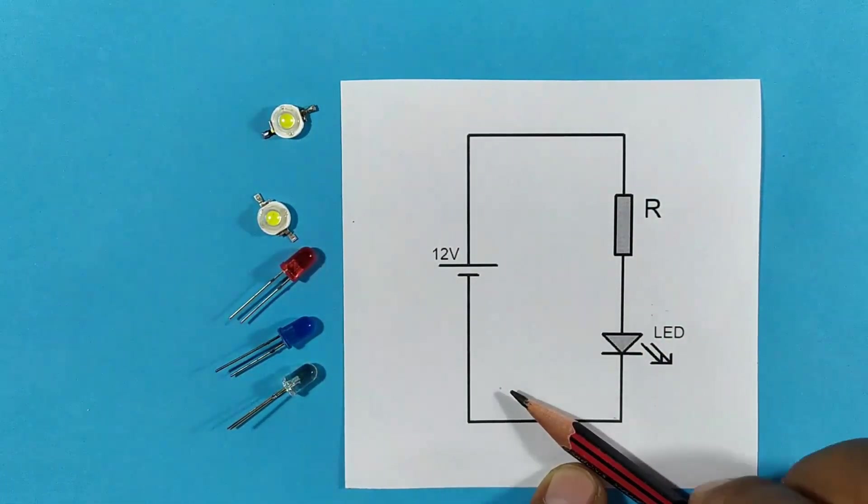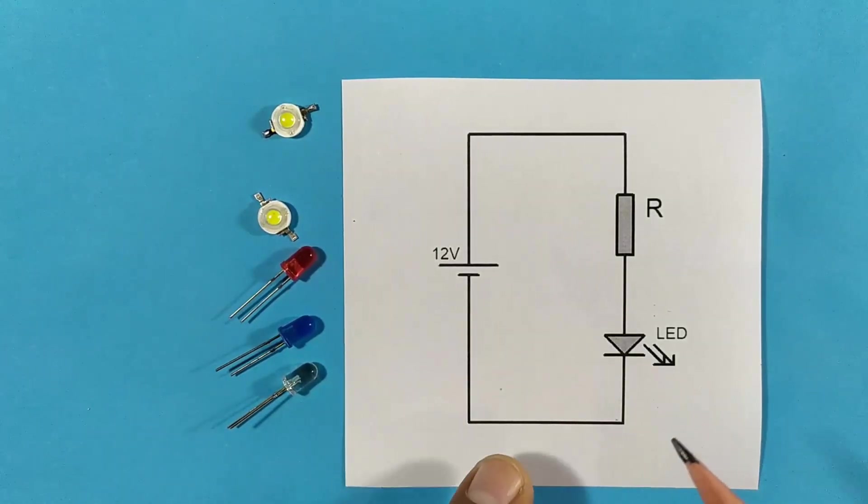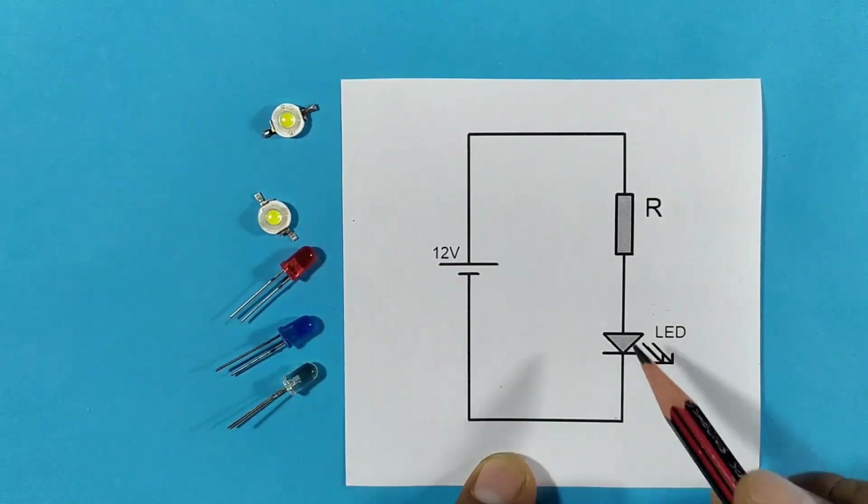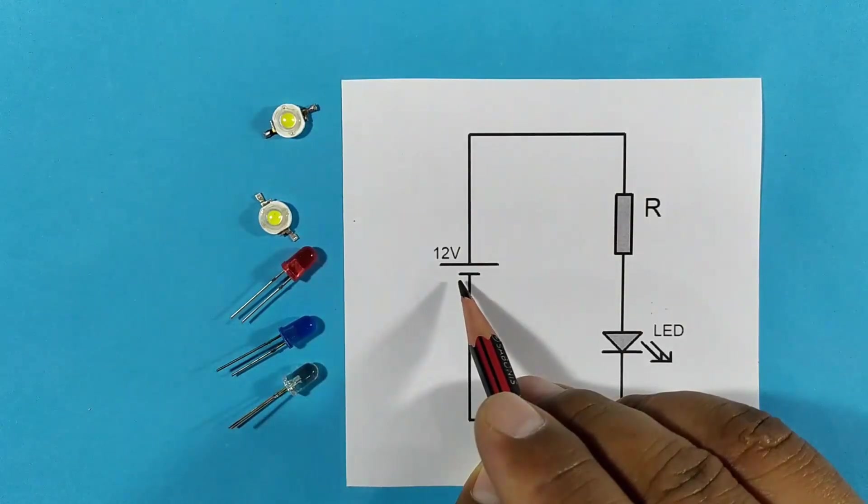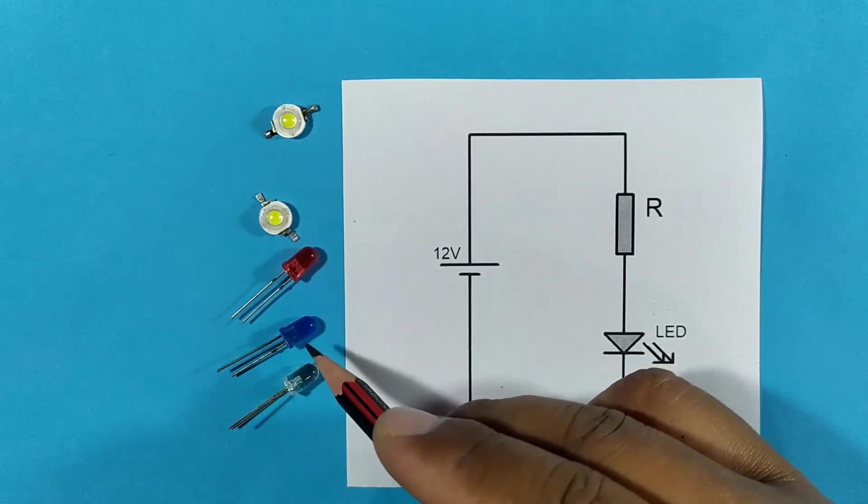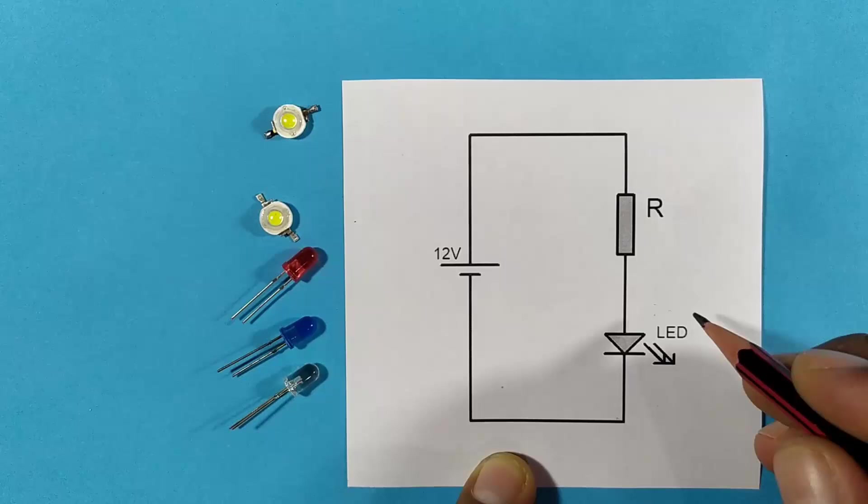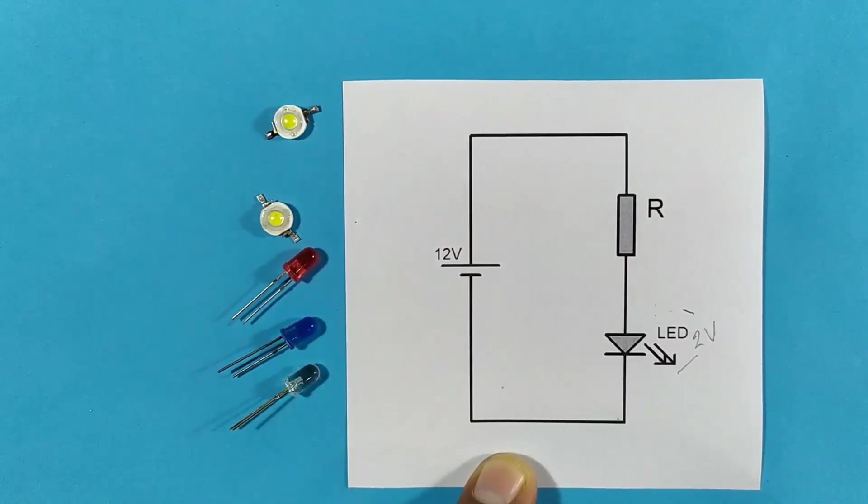Now let's continue with the calculation. The first thing is to know what voltage is going to be used to energize the LED. We have as an example 12 volts. Common LEDs need 2 volts, blue and white 3 volts. In the case of the red LED, 2 volts would be needed and the rest of the voltage would remain in the resistance.